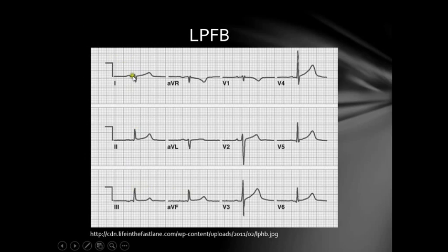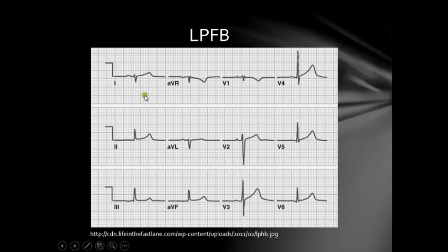However, it is important to know that left posterior fascicular blocks are quite uncommon. Therefore, we must first rule out other causes of right-axis deviation such as acute pulmonary embolism, right ventricular hypertrophy, lateral MI, etc. It is also quite rare to have this block in isolation because it usually occurs with right bundle branch block, which is what we call a bifascicular block.